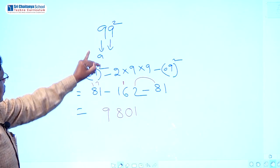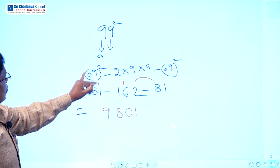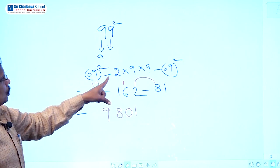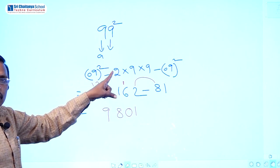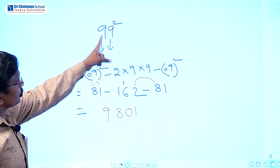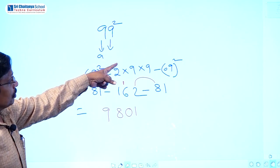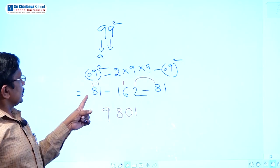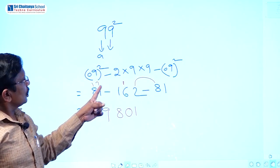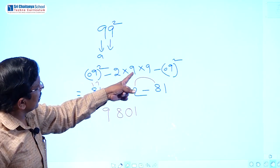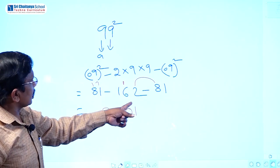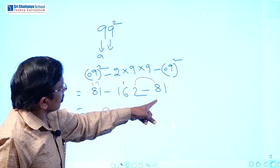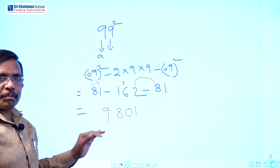Now 99 squared. Consider A as 9 and B as 9. A square means 9 times 9 equals 81. Then 2AB means 2 into 9 into 9 equals 162. B square means 9 times 9 equals 81. After balancing, we get 9801.